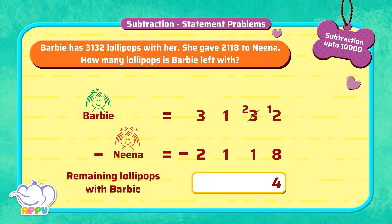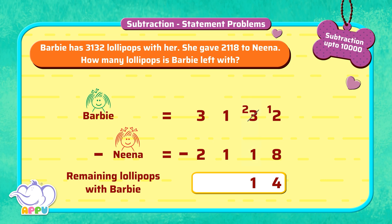Since we borrowed the 1 from 3, the 3 has become 2. So when we subtract 1 from 2, we get 1 in the tens place. And in the hundreds place, we have 1 minus 1 is equal to 0.